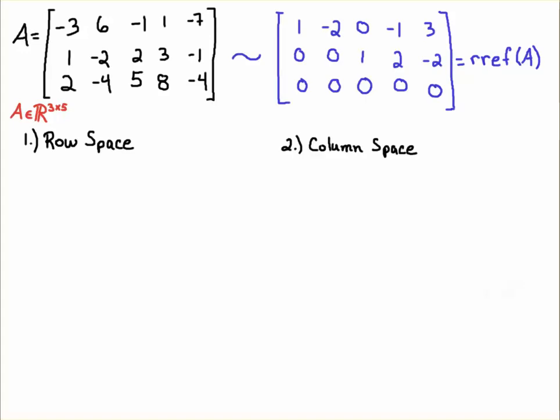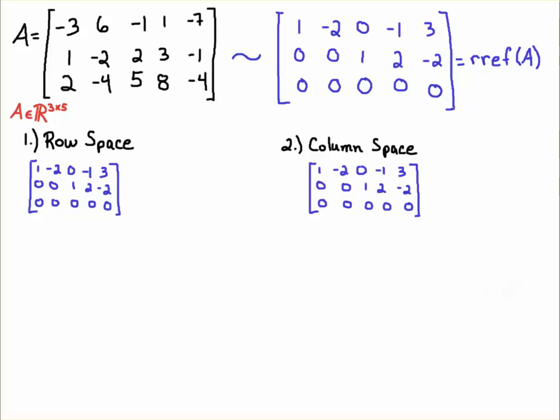Whenever you're going to determine the row space or column space, you always start the same way. You row reduce the matrix and get it down into its row reduced echelon form — the RREF. For the row space, we'll get the RREF. For the column space, we'll need the RREF. Once you have the RREF, it's actually rather simple to identify what the row space and column space of the matrix is.